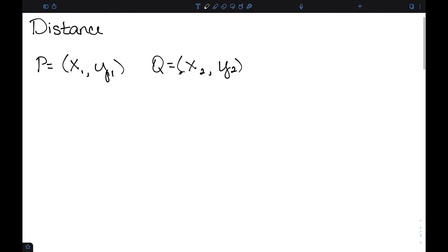Let's suppose I have two points, P which is (x1, y1) and Q which is (x2, y2). And I want to find the distance between P and Q. This is equal to the square root of (x2 - x1)² + (y2 - y1)².